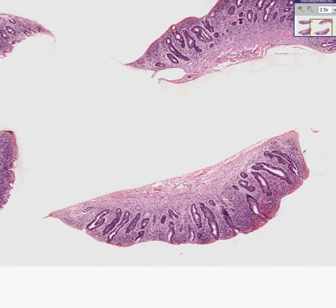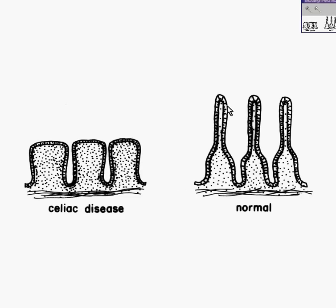Let me show you a diagram. The normal villus pattern of the small bowel should look like this, in which you have both very well-differentiated villi as well as pits going deeper into the mucosa. With celiac disease, also called SPRU, there is villus atrophy. The villus portions of the glands are gone in more severe cases, but the pits remain.